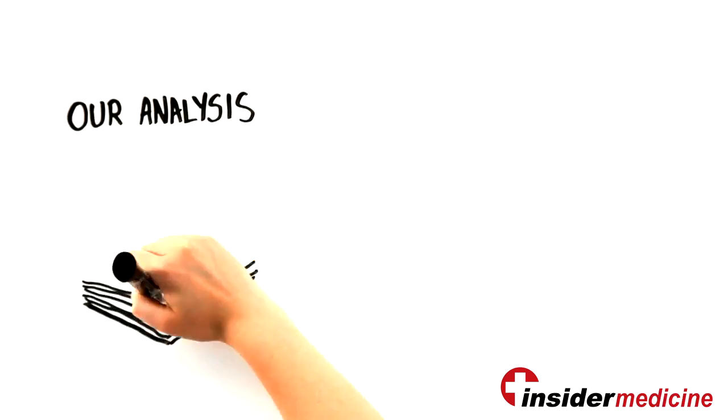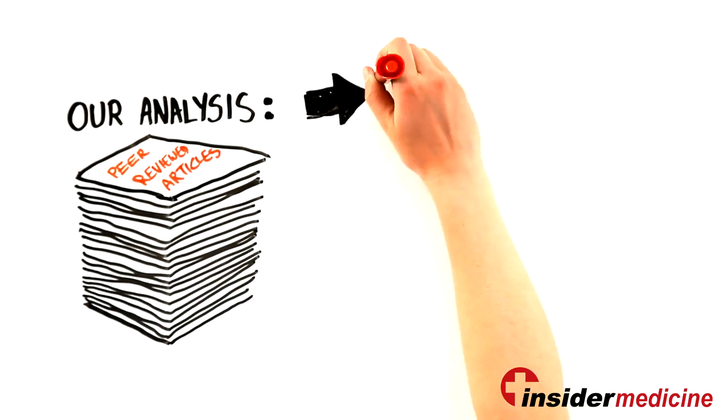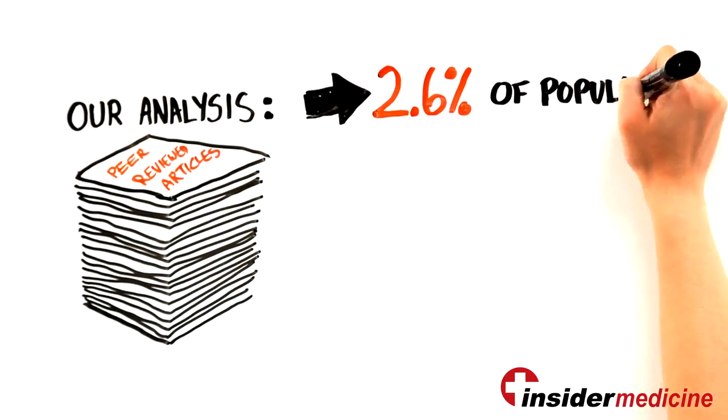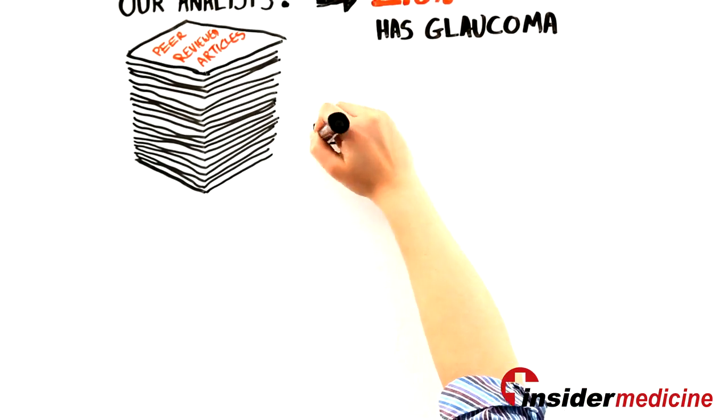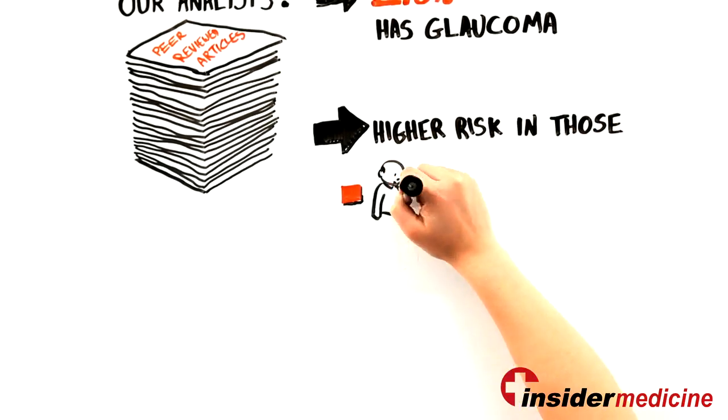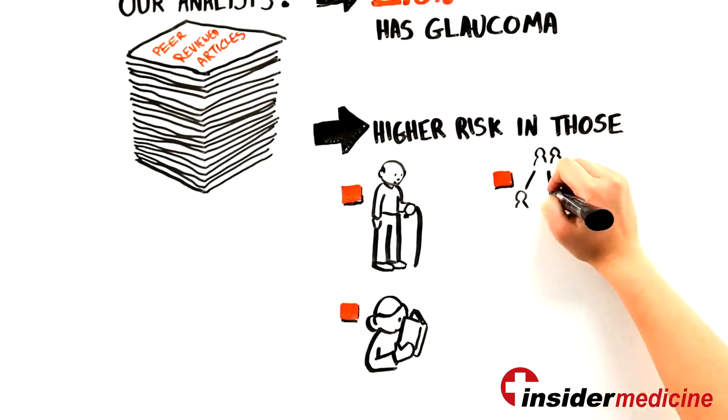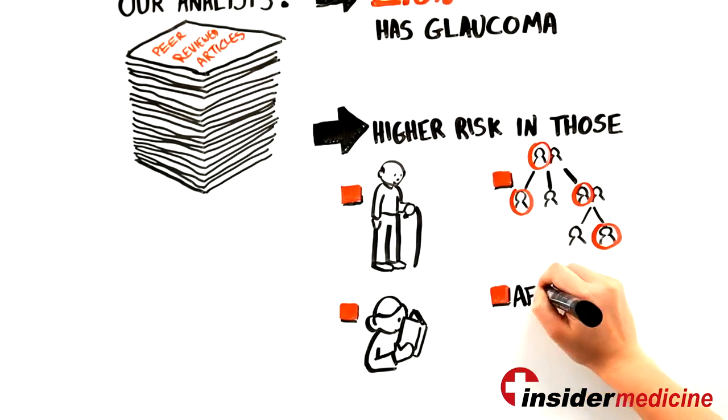Our analysis, based on a synthesis of 50 peer-reviewed articles, shows that 2.6% of the overall population has glaucoma. We also found a higher risk of glaucoma in those over the age of 80, those who are nearsighted, those with a positive family history, and those who are African American.